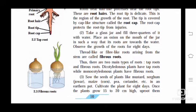Second activity: Take a glass jar, fill three quarters of it with water. Place an onion on the mouth of the jar in such a way that its roots are towards the water. After a few days, observe the thread-like or fiber-like roots arising from the stem. These are called fibrous roots.